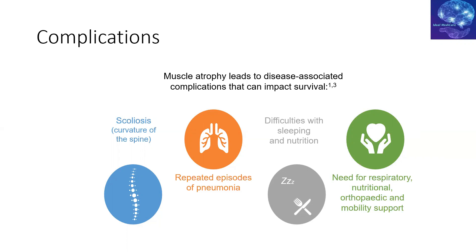The most common complications include skeletal abnormalities — scoliosis and worsening spinal curvature causing respiratory difficulty and mobility issues. These can be corrected orthopedically but require expertise and can be delayed with physiotherapy. Patients also tend to have repeated pneumonias due to respiratory muscle weakness, breathing and sleeping difficulties, and nutritional deficiency from swallowing issues. Enteral feeding can be considered to prolong life but will not change the course of disease.